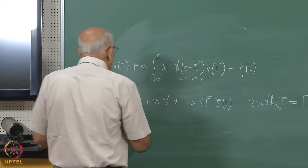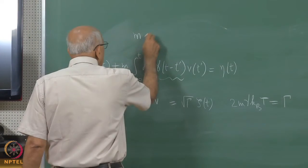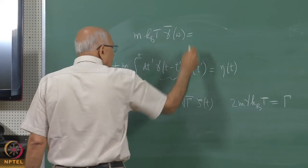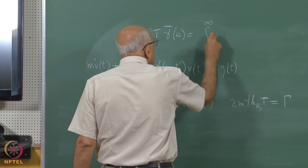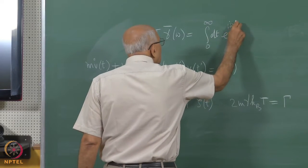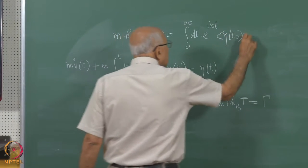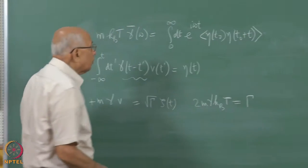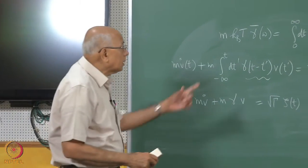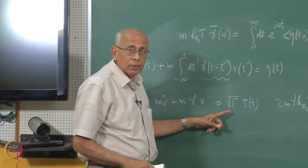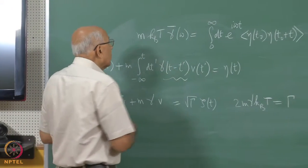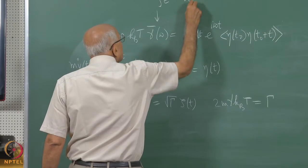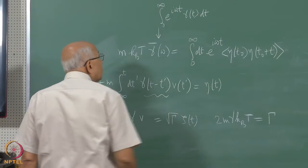The corresponding relation in the generalized Langevin equation turns out to be: M k_B T times gamma-bar(omega) equals the integral from zero to infinity of dt times e to the i omega t times <eta(t-naught) eta(t-naught + t)>. That is the second fluctuation-dissipation theorem in this problem. In the case where this memory function has a one-sided Fourier transform, that is gamma-bar(omega).